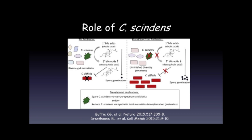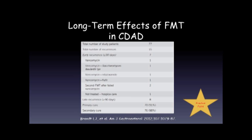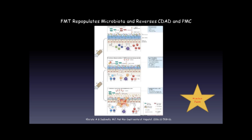When we come to therapy and the microbiome, there's a whole range of possible strategies: diet, prebiotics, probiotics, synbiotics, and most recently fecal microbiota transplantation. The primary cure rate of FMT is between 90 and 100 percent in C. difficile. FMT repopulates the microbiota and changes the balances between primary and secondary bile acids, between availability of short-chain fatty acids, and protects the host.